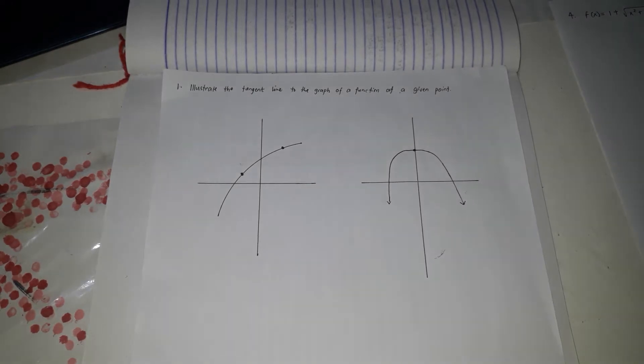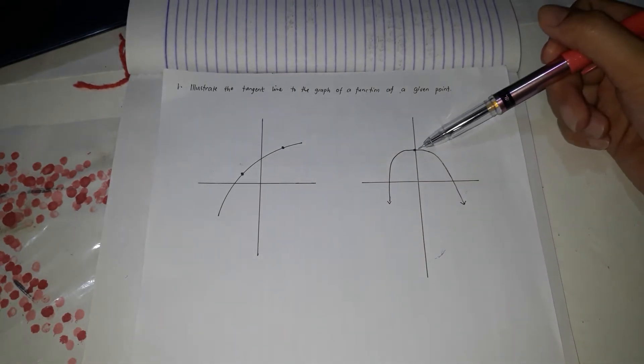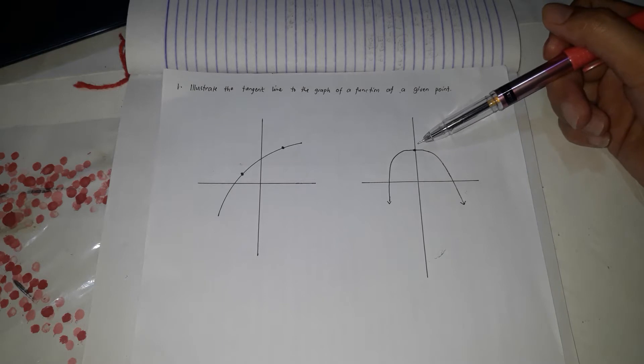Now we're going to illustrate the tangent line to the graph of a function at a given point. These are our graphs — there are two graphs. The first one has two points, and we're going to draw a tangent line to those two points. For the second graph, we're going to draw a tangent line at a given point.